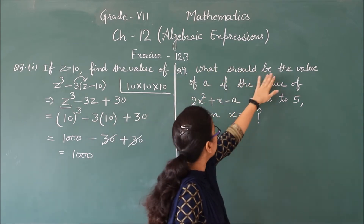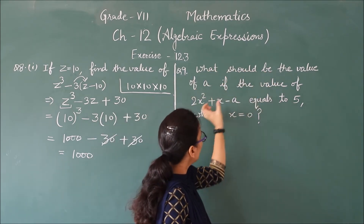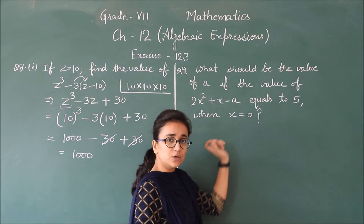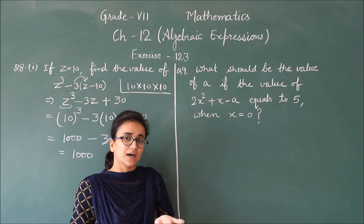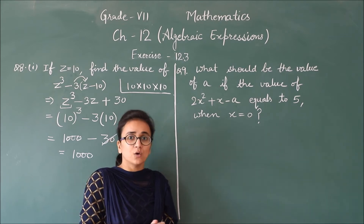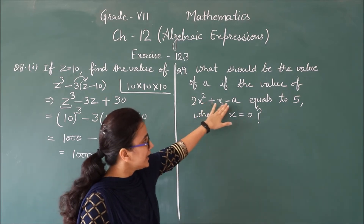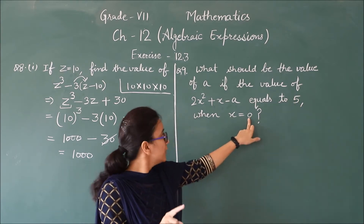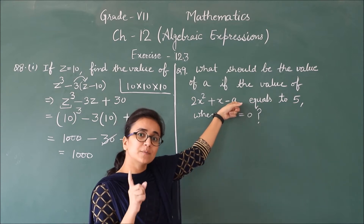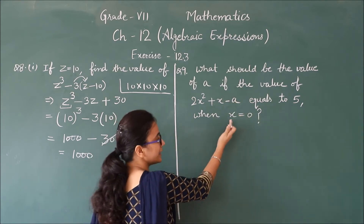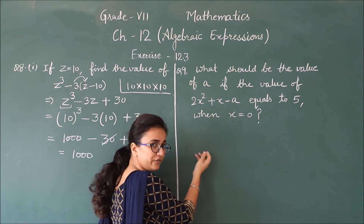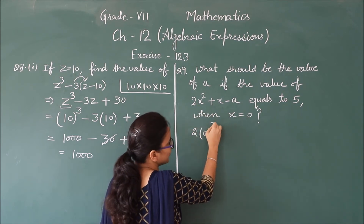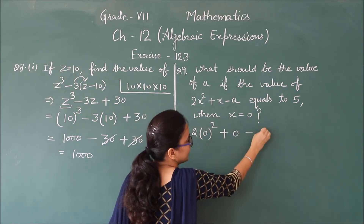Now let us do question number 9: what should be the value of a if the value of 2x square plus x minus a equals to 5 when x is equal to 0? Until now we were putting the variable's value into the given expression to find its value, but in this question the expression's value is already given as 5, and the variable's value is also given as 0, but the term 'a' is missing from this expression.